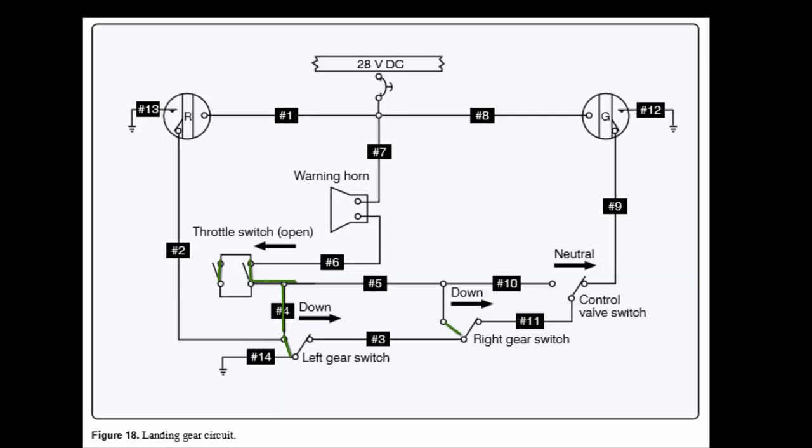So if that wire broke, yes, my landing gear horn would not work. The other choice is 2 and 9. Well, 9 is way over here. It's not even part of that circuit. We can't get there from here.